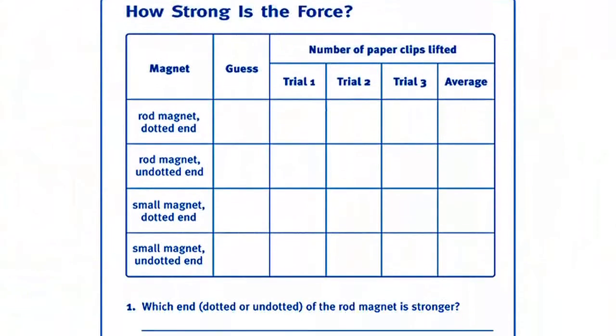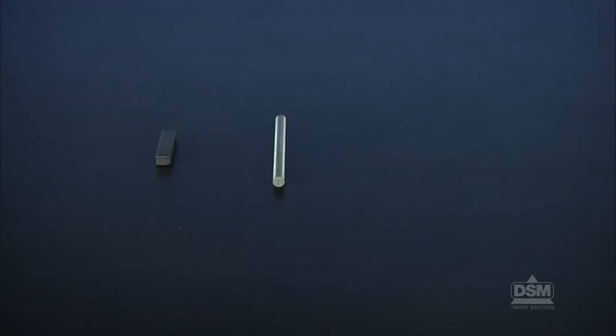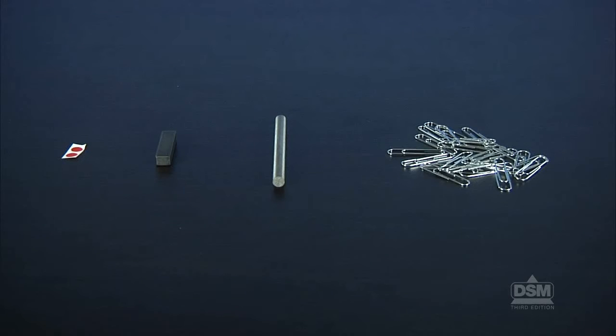To prepare for the activity, make a copy of Activity Sheet 3 Parts A and B for each student. Each group of two students will need a rod magnet, a small magnet, two dots, and 25 paperclips.